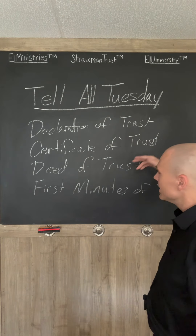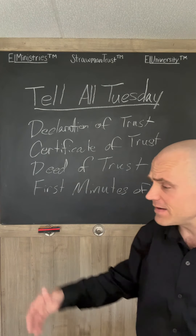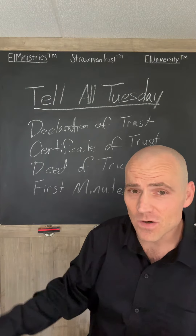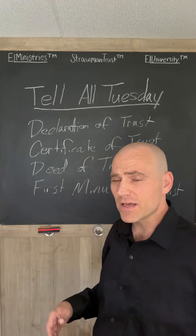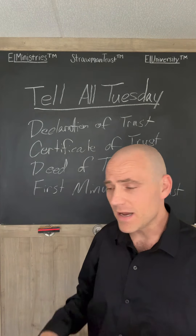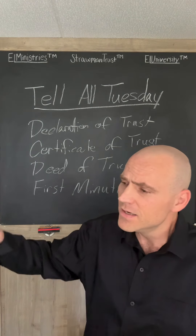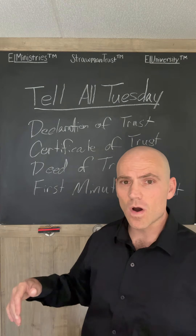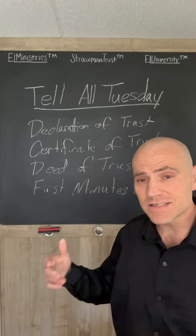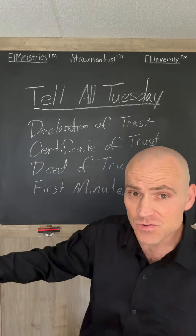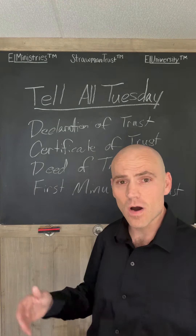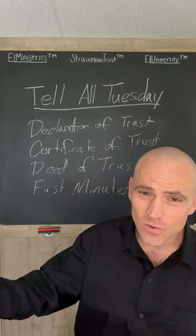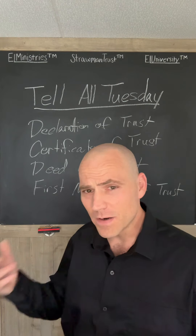The certificate of trust synopsizes the declaration of trust. Let's say your beneficiaries are persons number 3, 5, and 8 — you don't want to broadcast their names or have their names in public records. So if you go and open a bank account, for example, you would use the certificate of trust, not the declaration of trust. The certificate of trust would say, for example, 'eldest son of Johnny Justice Strawman' as beneficiary number one, 'eldest daughter' as beneficiary number two, and so on. In the declaration of trust, you would set forth actual names. You would only give their statuses in the certificate of trust, which you use to transact certain business like opening a bank account.